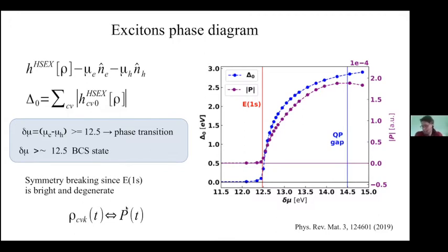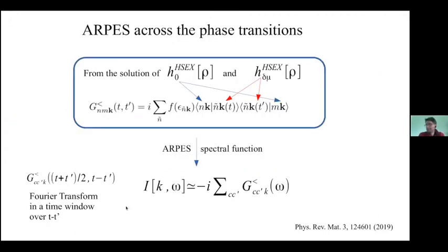One way to look at this state is to study the time-resolved ARPES signature. Formally, one can construct the ARPES signature from the G-lesser Green's function. The G-lesser can be constructed from the eigenstate of the equilibrium Hamiltonian and the eigenstate of this non-equilibrium Hamiltonian. Then via Fourier transform with respect to the relative time coordinates, one gets the ARPES signal.